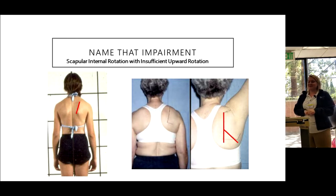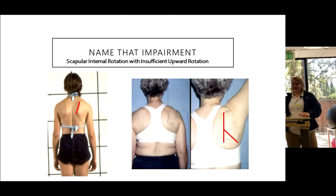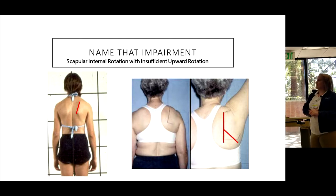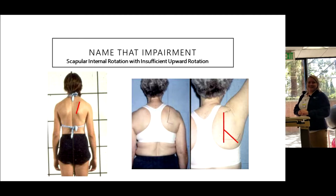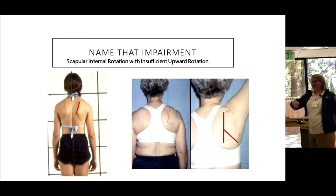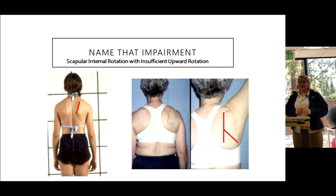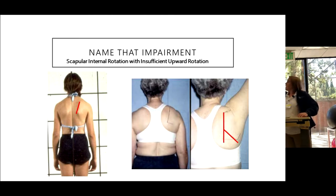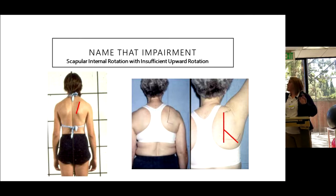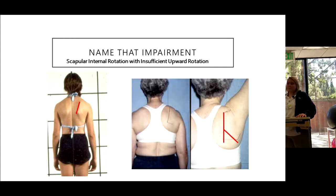Both of these patients have the same scapular diagnosis: scapular internal rotation with insufficient upward rotation. You can see the medial border of the scapula — you shouldn't be able to see someone's medial border like that. And this angle here should be at 60 degrees; her inferior angle should be more up here. That's how you get the diagnosis of internal rotation with insufficient upward rotation.